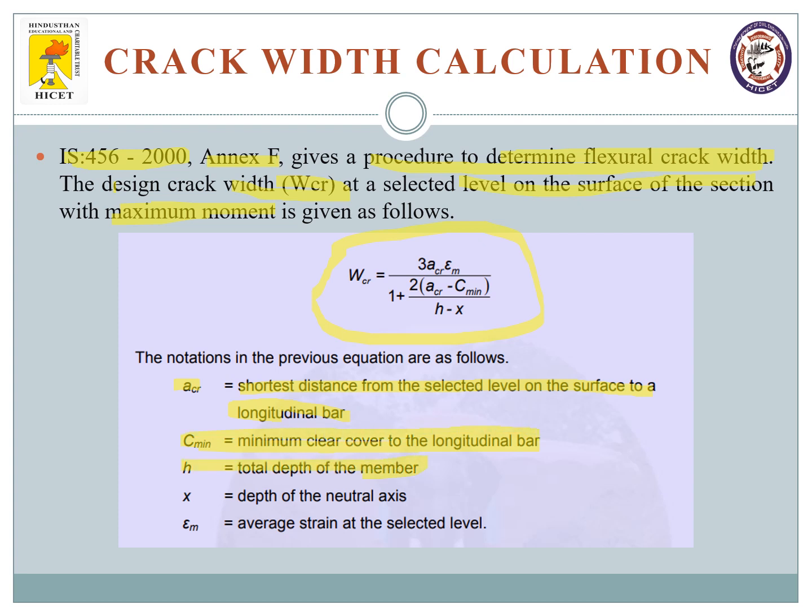We will see about the notations here very clearly. ACR is the shortest distance from the selected level on a surface to the longitudinal bar. C minimum is the minimum clear cover to the longitudinal bar. H is the total depth of the member. X is the depth of the neutral axis and epsilon M is the average strain at the selected level.